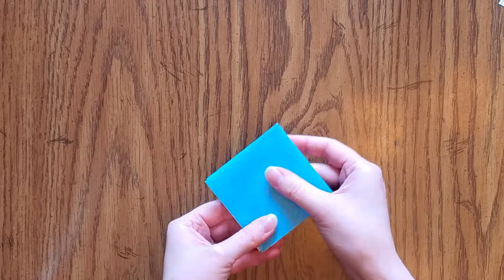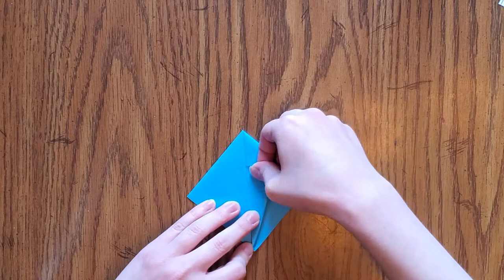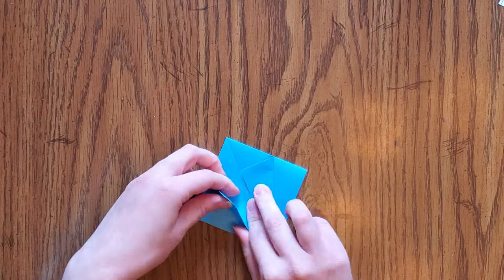Now position it so that the flaps are down. Take the top part of one corner and fold so the edge lines up with the center. Do the same on the other side and then flip the paper over and repeat.